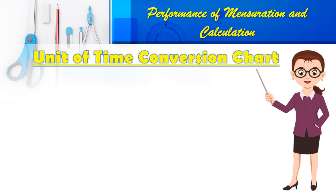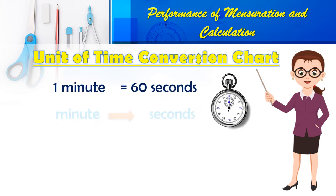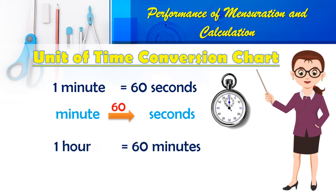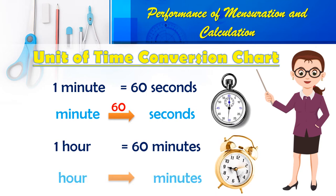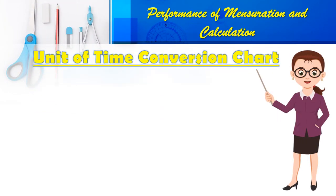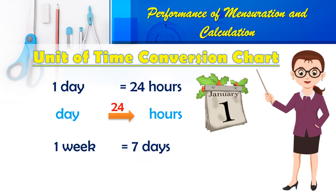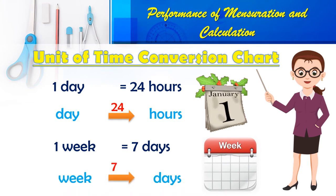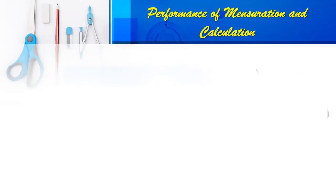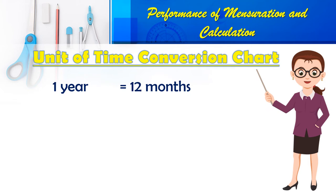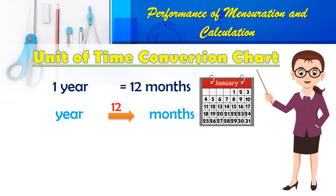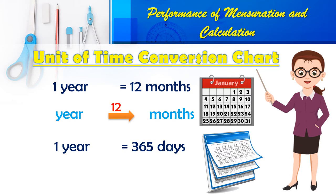There are 365 days in a year. To convert minutes to seconds, multiply minutes by 60. To convert hours to minutes, multiply hours by 60. To convert days to hours, multiply days by 24. To convert weeks to days, multiply weeks by 7. To convert years to months, multiply years by 12. To convert years to days, multiply years by 365.